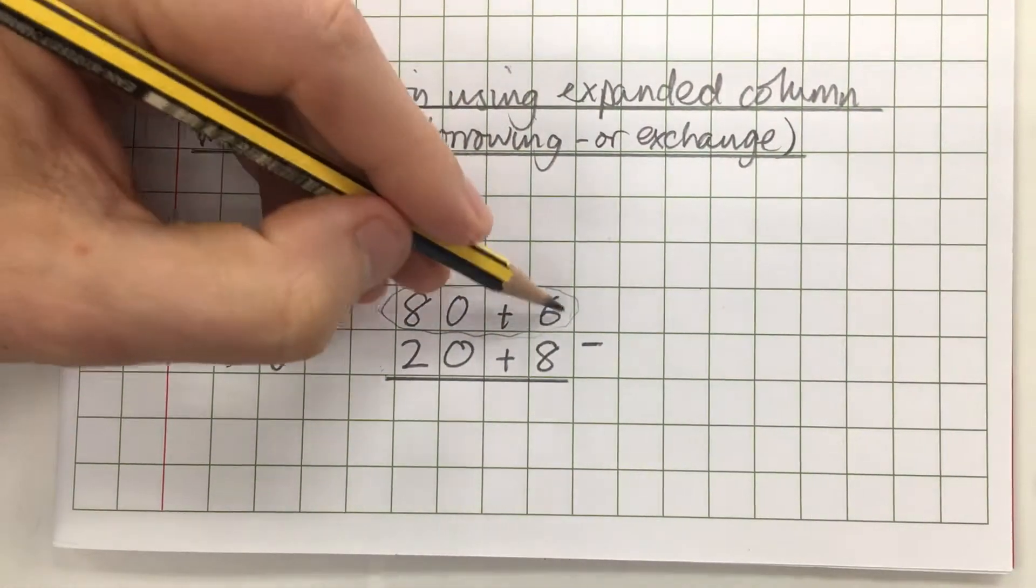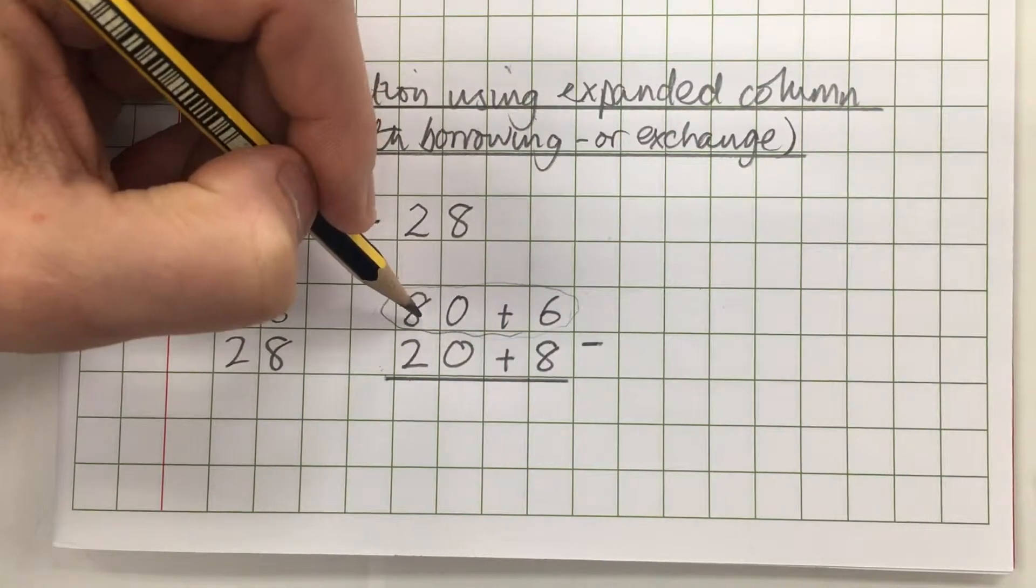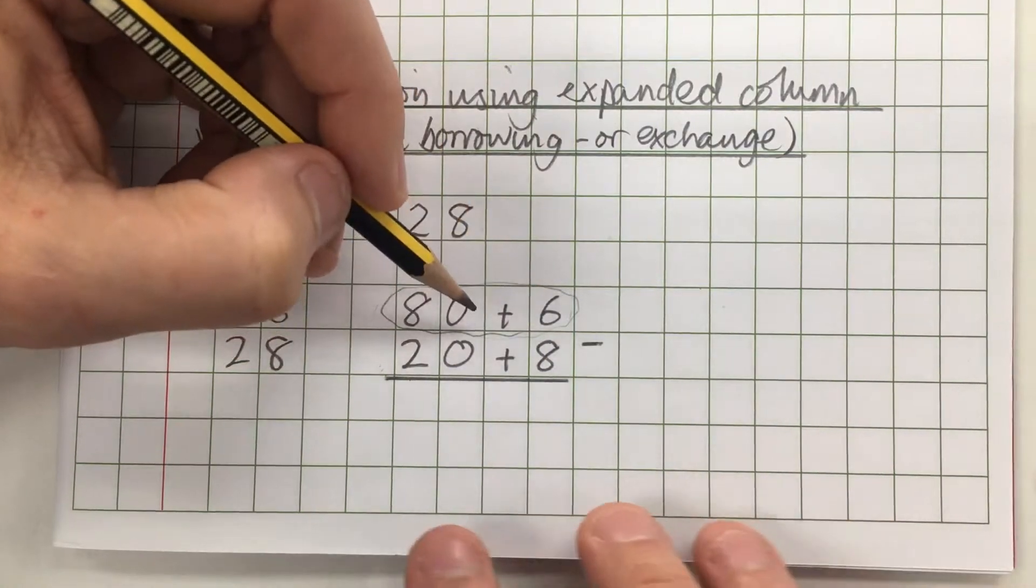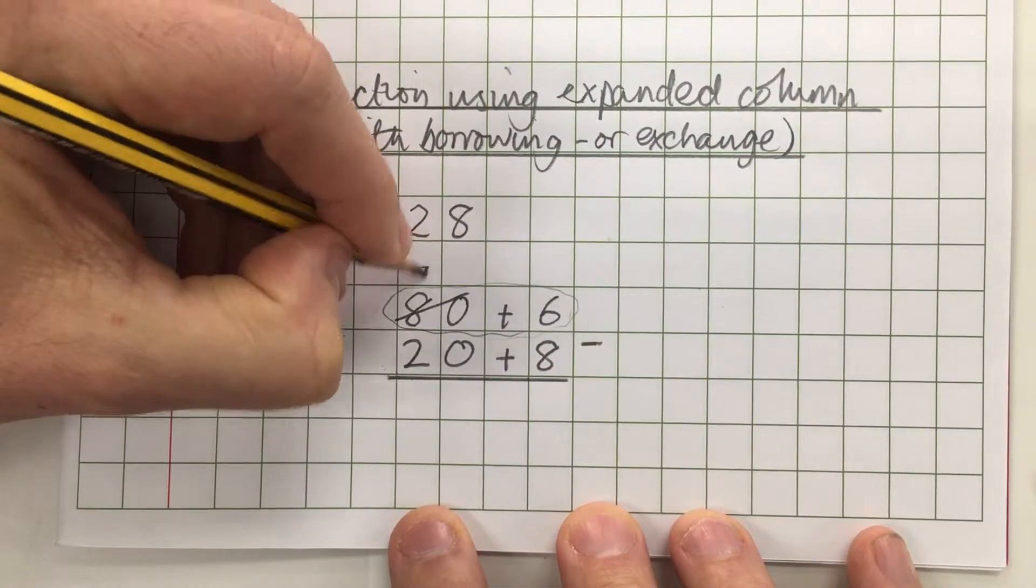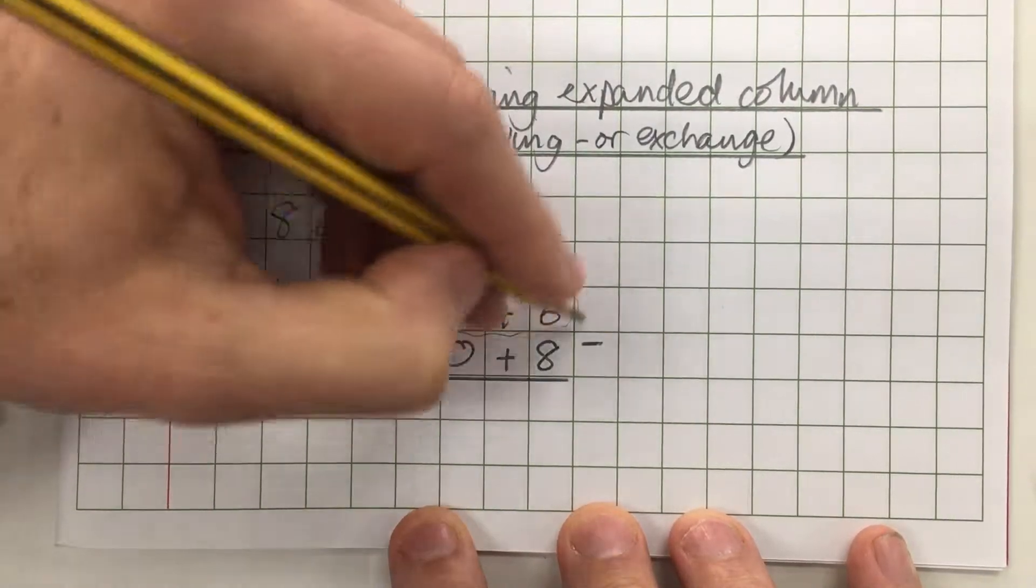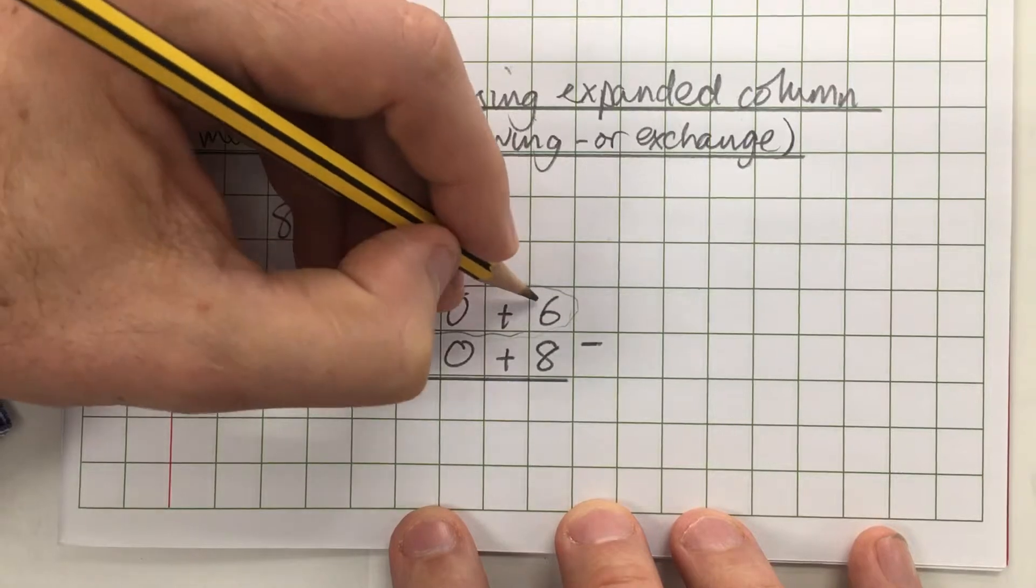So I'm allowed to move a part of this number from the tens area into the ones area. That's what I'm going to do - I'm going to take 10 away from here making this 70 and keep it within the same number but shuffle it over to here and add the 10 onto the 6.